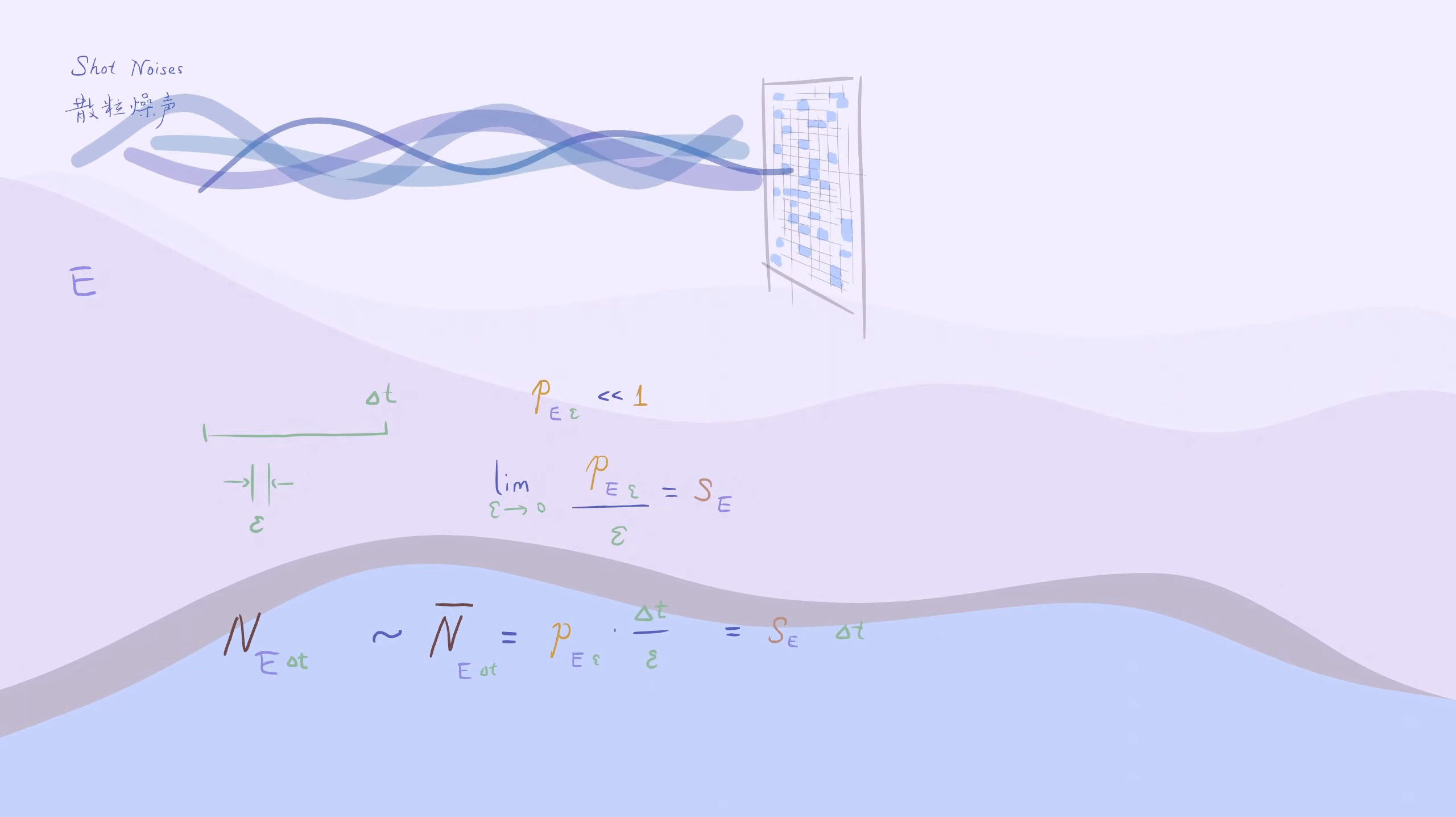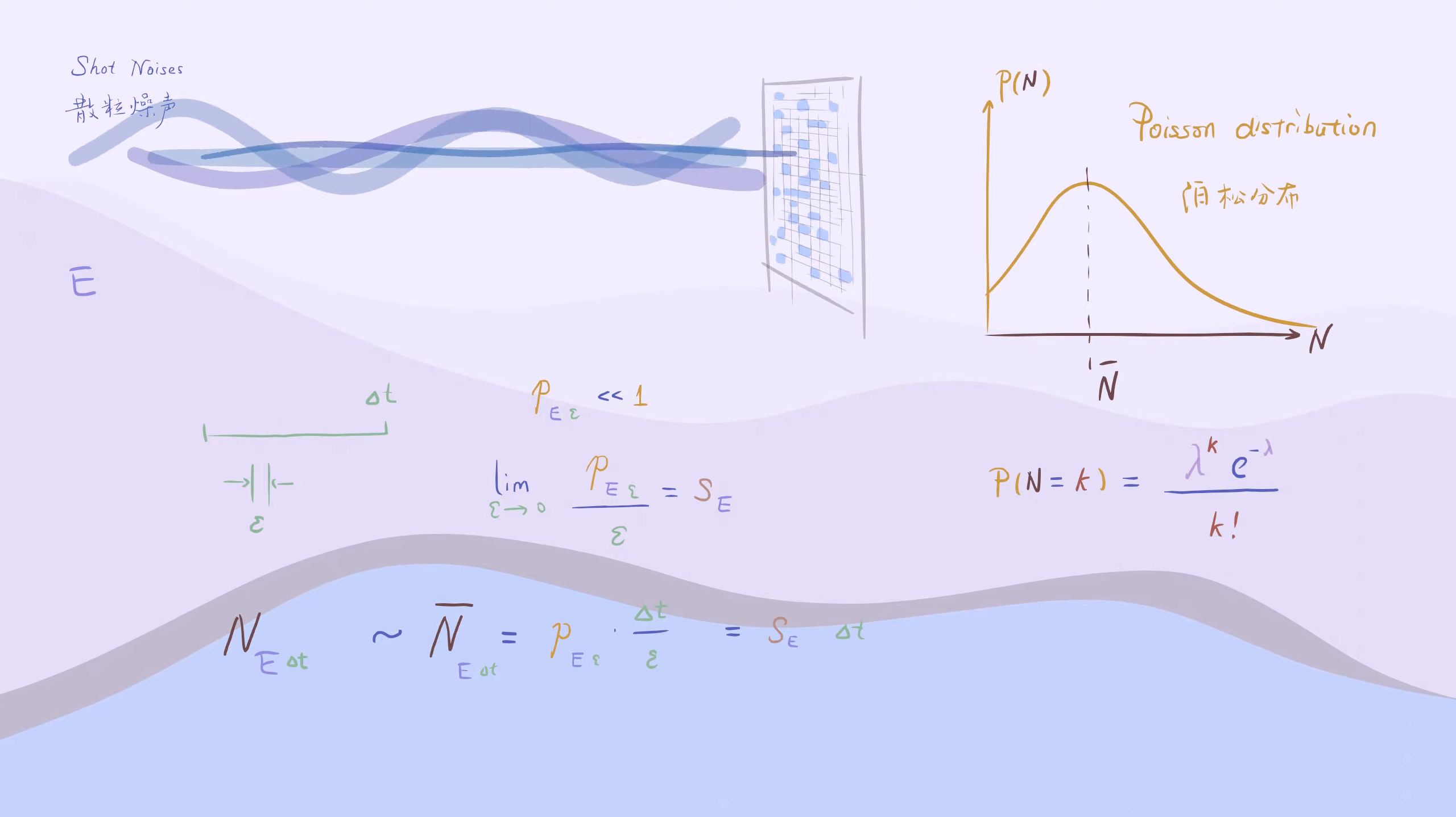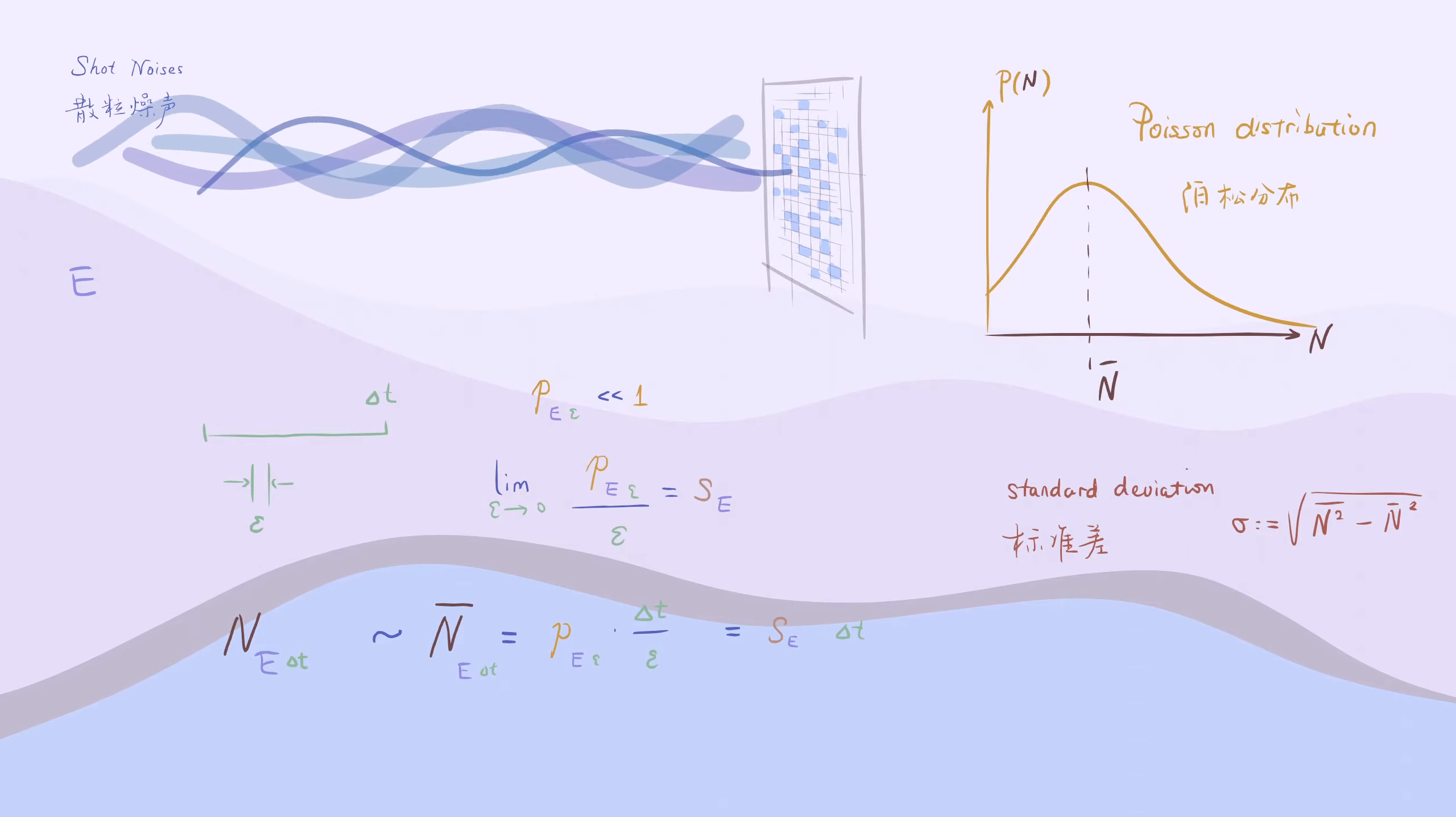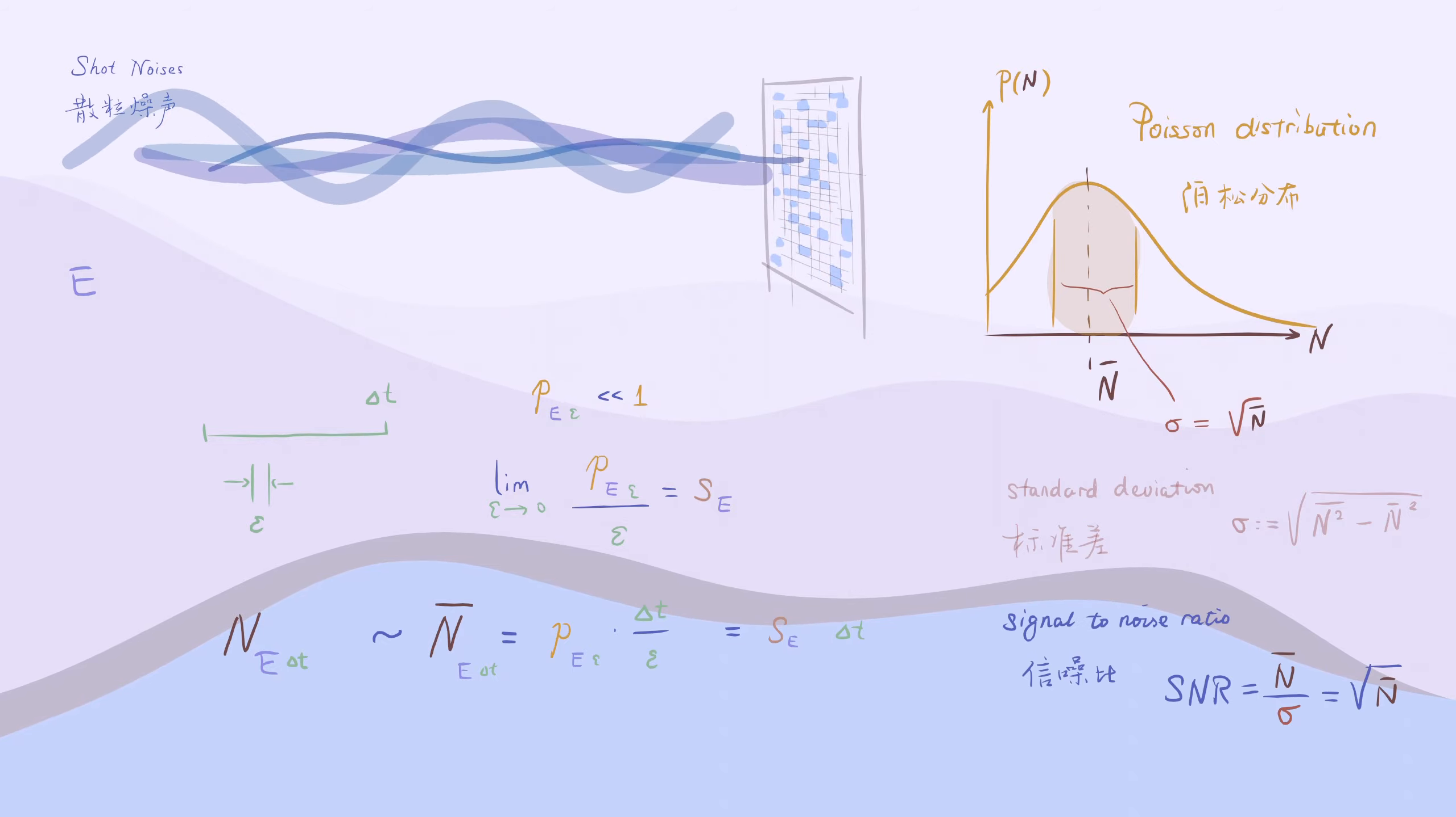In reality, n forms a distribution peaked around that mean value. This distribution is called the Poisson distribution. We use the property standard deviation to mark how much the actual count most likely deviates from the mean, which turns out to be square root of n bar. This is a good estimation of the amount of shot noises for light intensity e and exposure time delta t, and the signal to noise ratio is also square root of n bar.